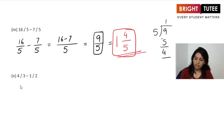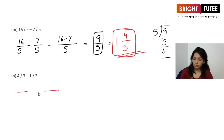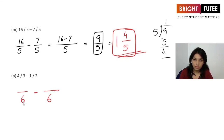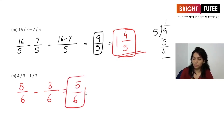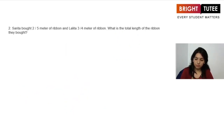Next: 4/3 minus 1/2. Converting to like fractions with LCM 6: 3 times 2 gives 6, so 4 times 2 is 8, giving 8/6. And 2 times 3 gives 6, so 1 times 3 is 3, giving 3/6. Subtracting: 8 minus 3 is 5, so the answer is 5/6.